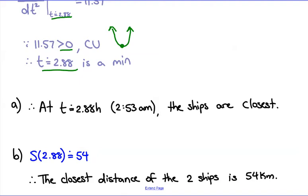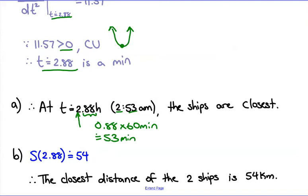We answered part A: they're closest at 2.88 hours. The 2 represents 2 a.m., and the 0.88 multiplied by 60 minutes gives about 53 minutes. So the ships are closest at approximately 2:53 in the morning. For part B, substitute 2.88 back into the distance formula S to get the actual distance. Around 2:53 in the morning, both ships are about 54 kilometers apart — that is the closest distance they'll be.